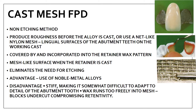Cast mesh fixed partial dentures use a non-etching method. Roughness is produced before the alloy is cast, using a net-like nylon mesh placed on the lingual surface of the abutment. The nylon mesh is covered with a wax pattern and then cast, producing retainers incorporating the mesh. This eliminates the need for etching and allows use of noble metal alloys. Disadvantages include stiffness making adaptation difficult, and wax running into the mesh, blocking undercuts and compromising retentivity.